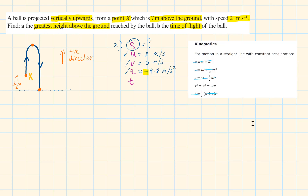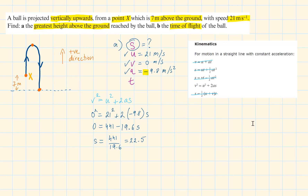We use the formula without T: V squared equals U squared plus 2AS. Replacing the values, 0 squared equals 21 squared plus 2 times minus 9.8 times S. Rearranging, we find S equals 22.5. This is the movement from X up to the top, but X is 7 metres above the ground. So the greatest height reached by the ball is 7 plus 22.5, which is 29.5 metres. This is why a diagram is very crucial when solving mechanics questions.